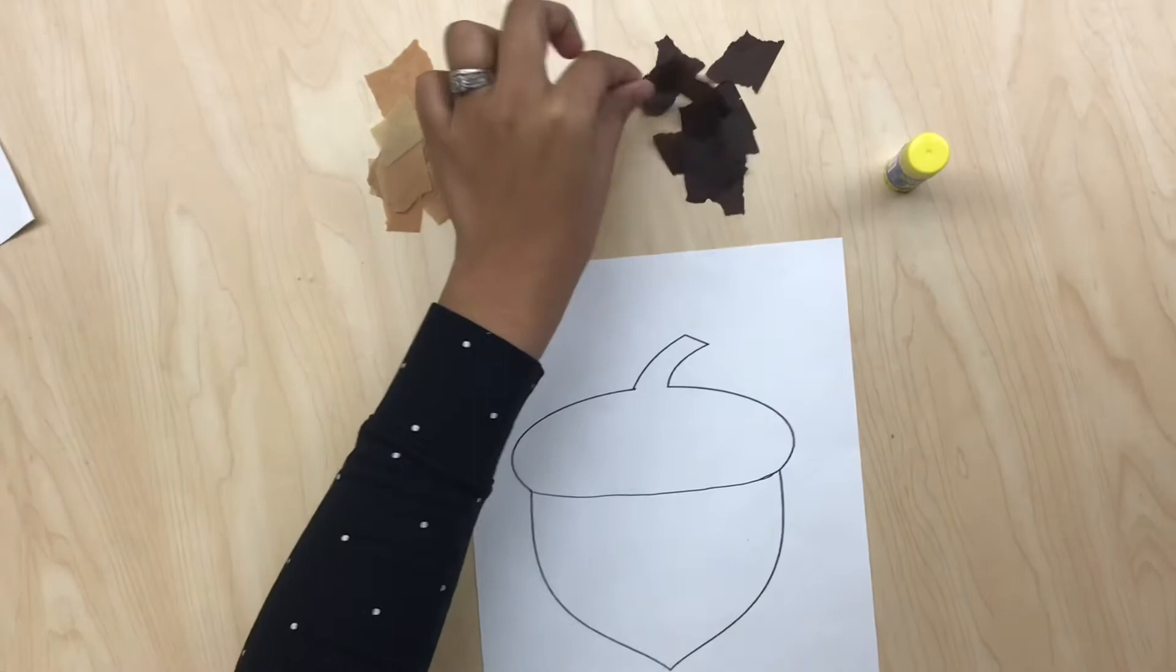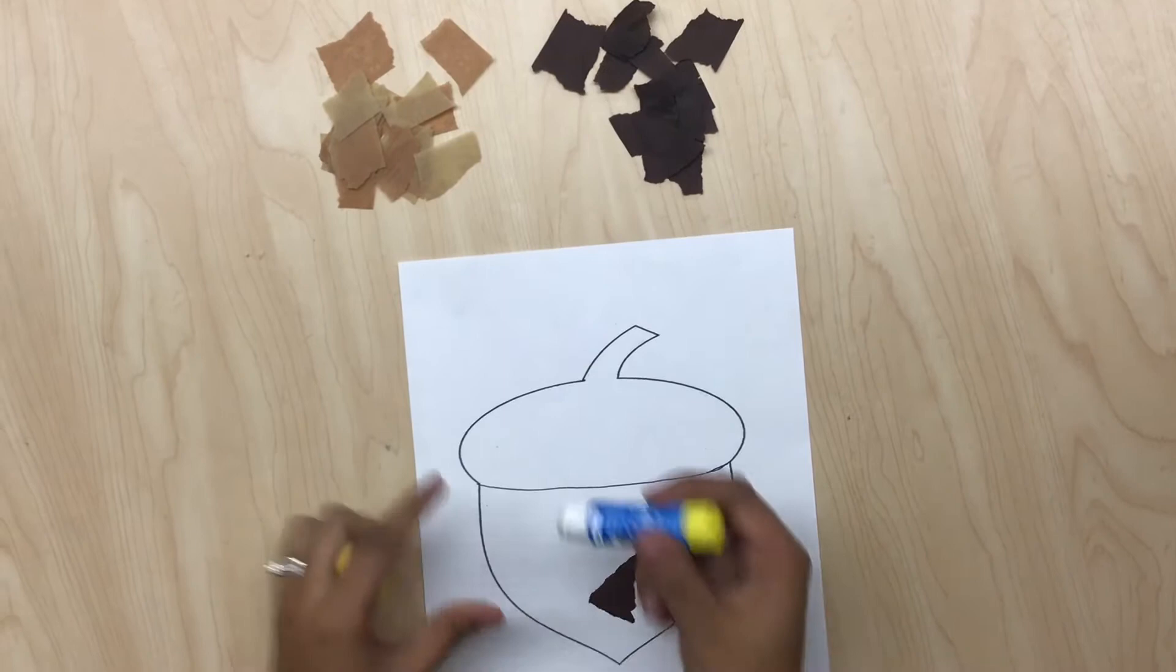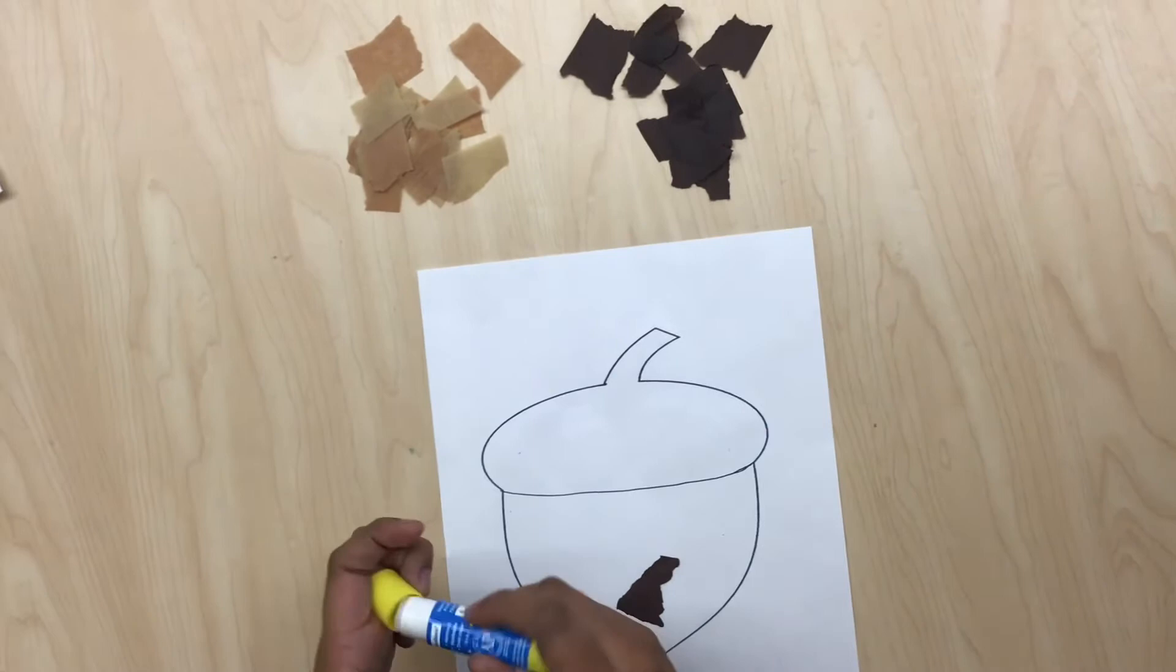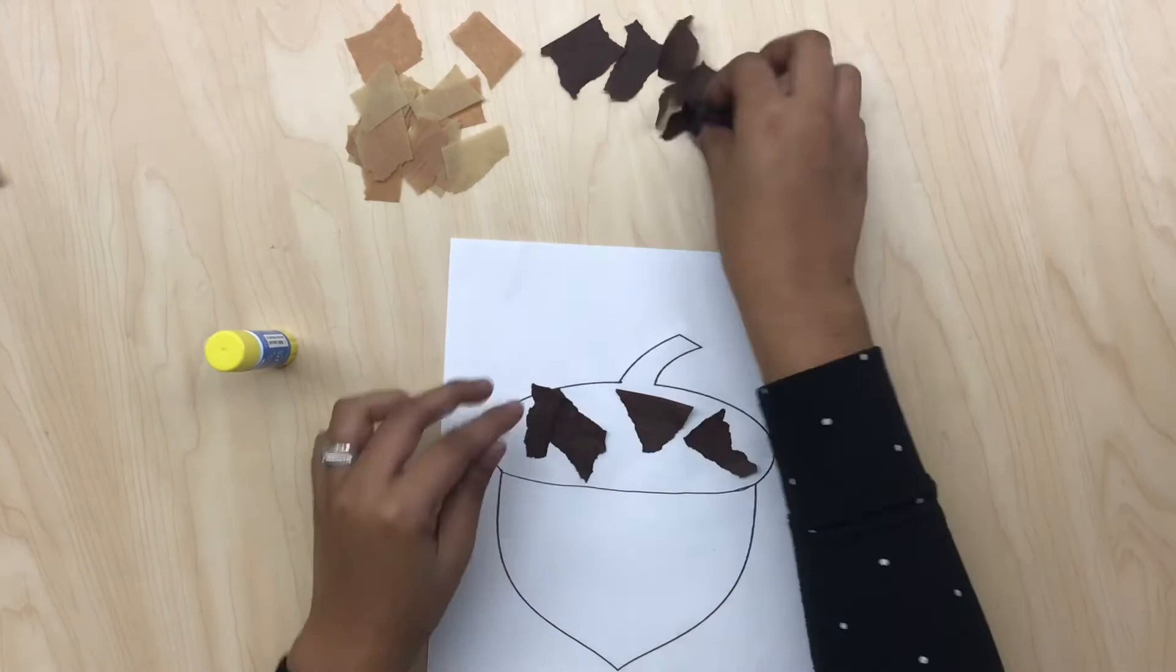First, we're going to get the dark tissue paper and we're going to put them on the stem of the acorn. I'm going to glue them and I'm going to use the dark tissue paper here.